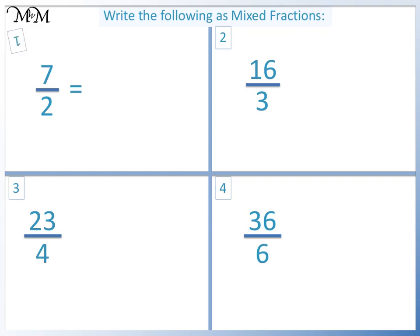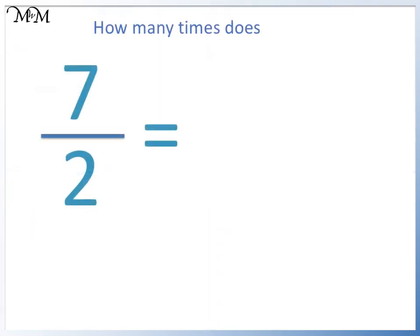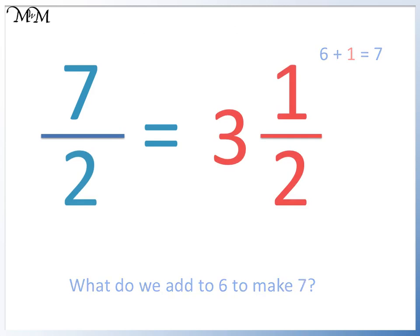Question 1. 2 goes into 7 3 times. We add 1 to 6 to make 7. 7 halves equals 3 and 1 half.